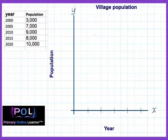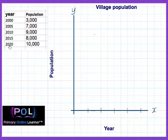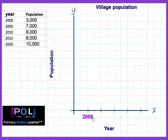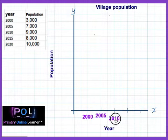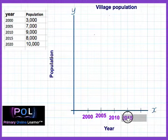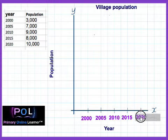Our years start from 2000 right up to 2020. So we have 2000, then 2005, then we go to 2010, then 2015, then 2020.